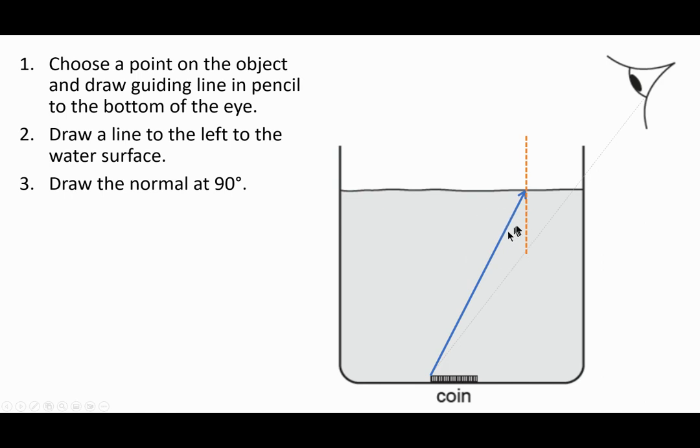Because I'm going from a more optically dense to a less optically dense medium, I need to make sure that my angle of refraction is bigger than my angle of incidence. The angle of incidence is always between the incoming ray and the normal.